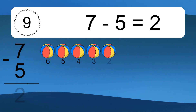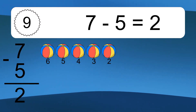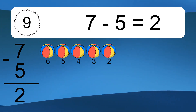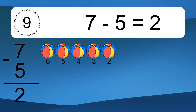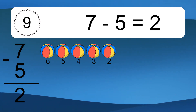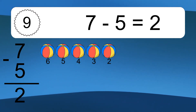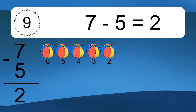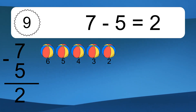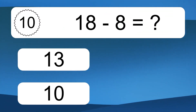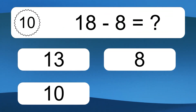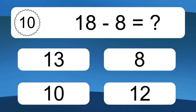19 minus 5 equals what? 19 minus 5 equals 14. Let's count it. 18, 17, 16, 15, 14.